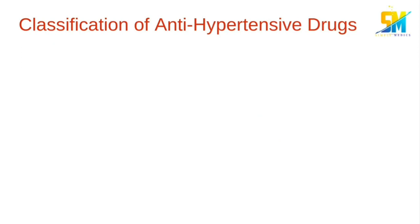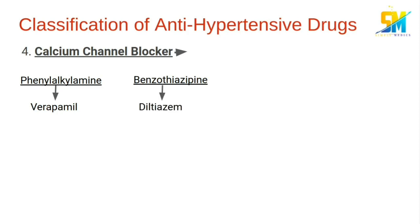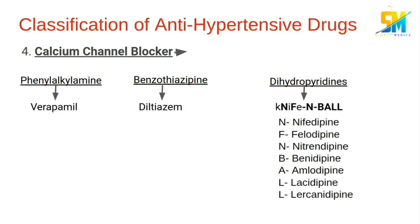The fourth category is the calcium channel blockers, which include phenylalkylamines, in which the drug is verapamil, and benzodiazepines, in which the drug is diltiazem. Then we have dihydropyridines, which we can remember with the mnemonic NIPHENOL: nifedipine, felodipine, nitrendipine, benidipine, amlodipine, lacidipine, and lercanidipine.